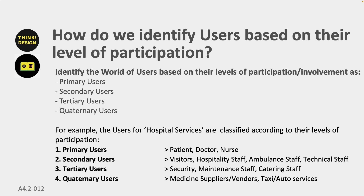For example, users for hospital services are classified according to levels of participation. Primary users are the patients, doctors, and nurses. Secondary users are visitors, hospital staff, ambulance staff, and technical staff. Tertiary users could be security and maintenance people, catering staff. Quaternary users could be medicine suppliers or vendors, and taxi or auto services next to the hospital.